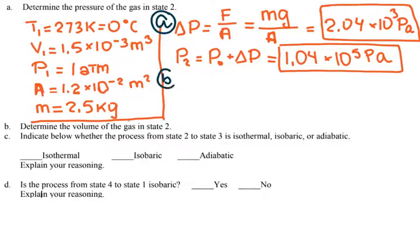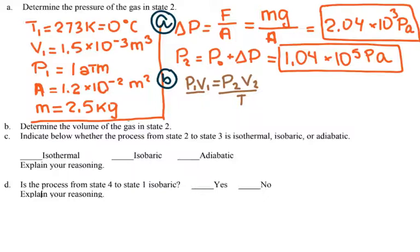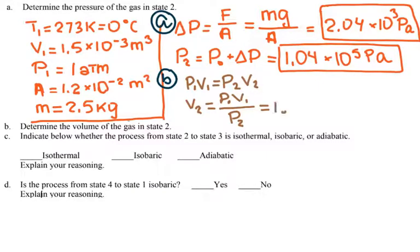For part B, they ask you to find the volume of the gas in state 2. Since the temperature stays the same, this is an isothermal process, so P1 V1 equals P2 V2. Solving for V2 gives V2 equals P1 V1 divided by P2. Plugging in the numbers gives V2 approximately equal to 1.47 times 10 to the negative 3 cubic meters.